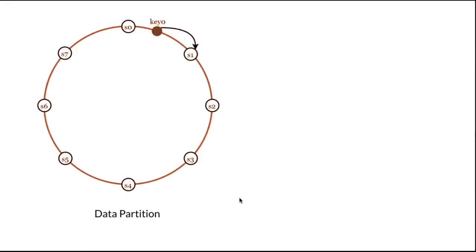Now we can talk about data partitioning. For a large-scale application it is impossible to fit the complete dataset in a single server, so the simplest way is to split the data into smaller partitions and store them on multiple servers. There are two challenges when partitioning: one is how to distribute data across multiple servers evenly, and the second is to minimize data movement when nodes are added or removed dynamically. One way to solve this, as we saw previously, is consistent hashing — a great technique to solve these problems.